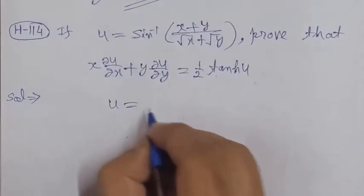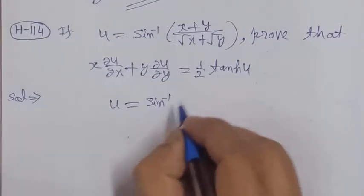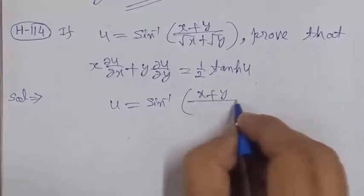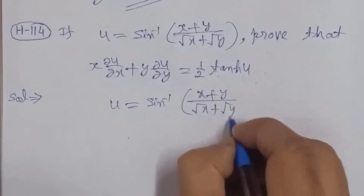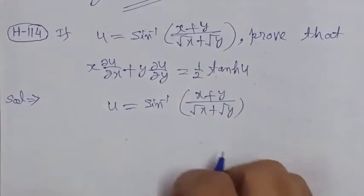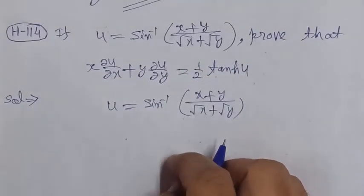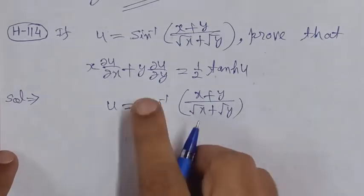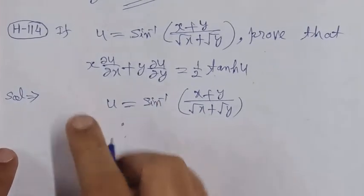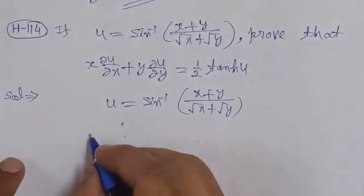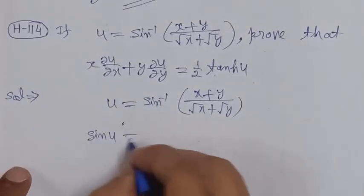Let's start the solution. The given value is u equals sin inverse (x plus y) upon root x plus root y. To apply Euler's theorem for homogeneous functions, we need to rewrite this expression.